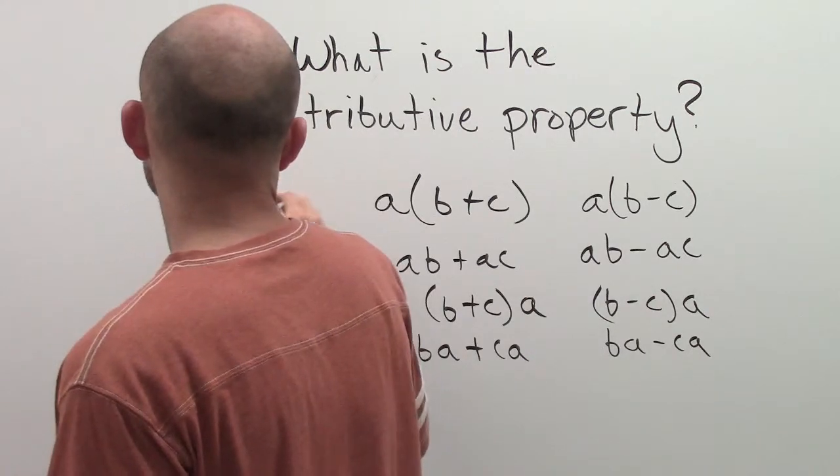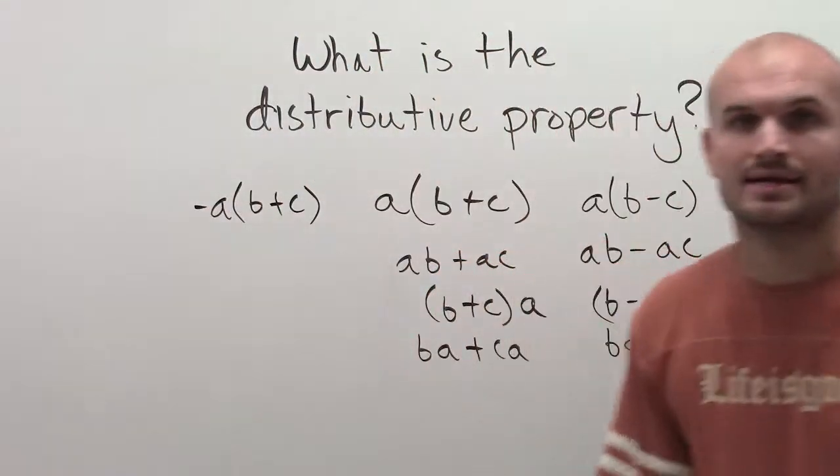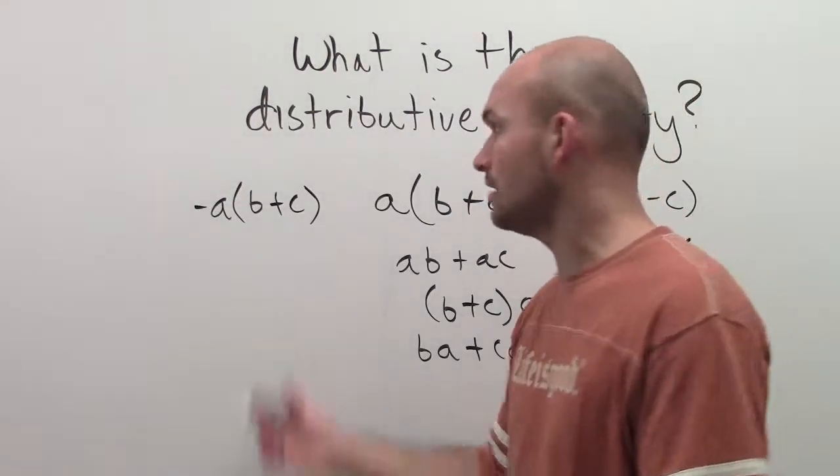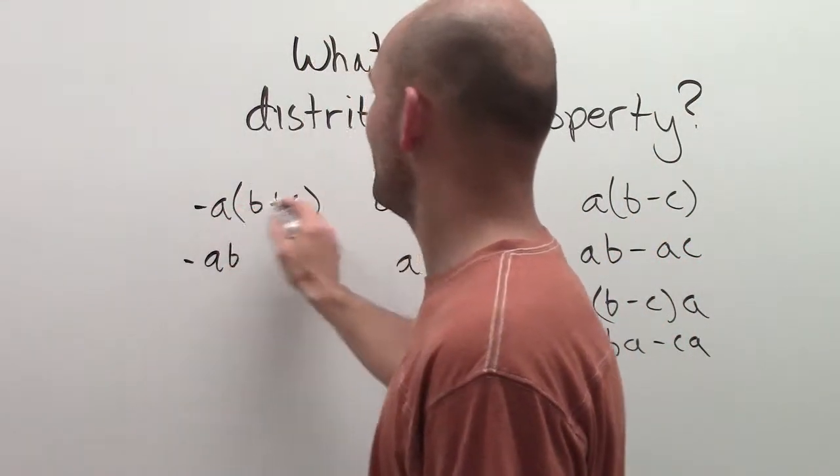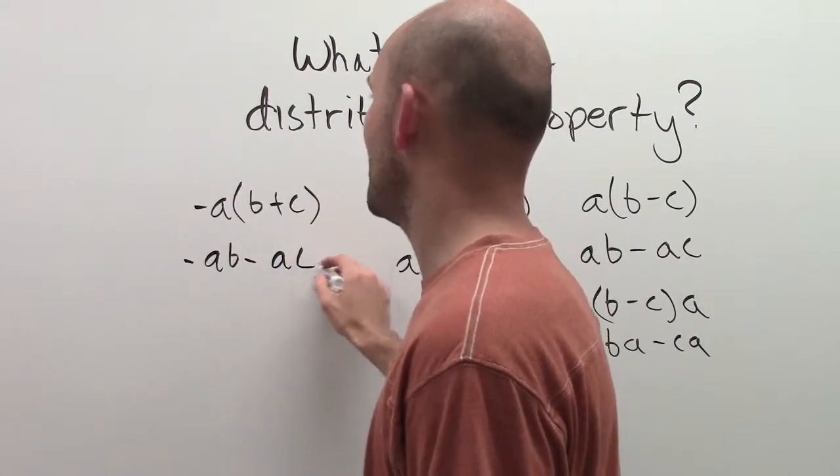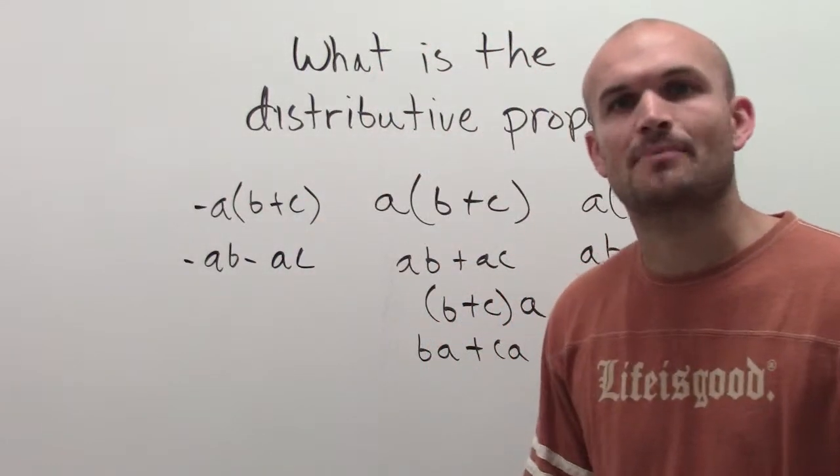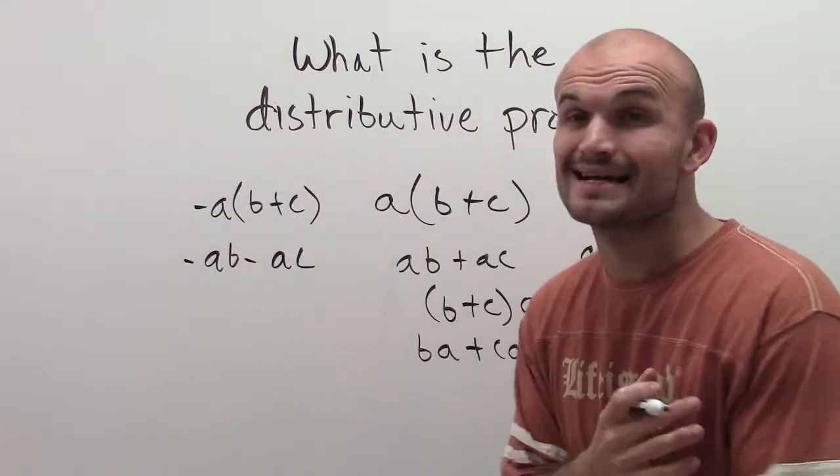They don't know what to do when it's a negative a times b plus c. Well, negative a times b is negative ab, and negative a times c is negative ac. So it's just going to change their operations or just the signs a little bit.